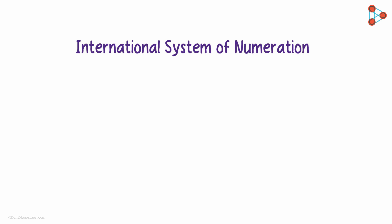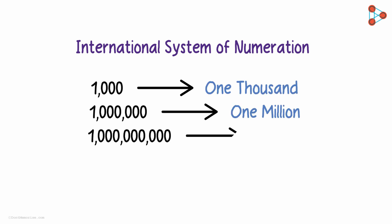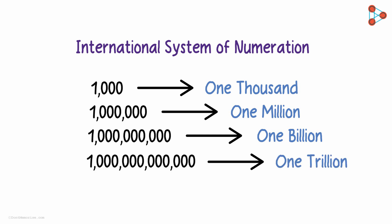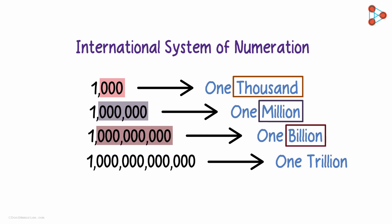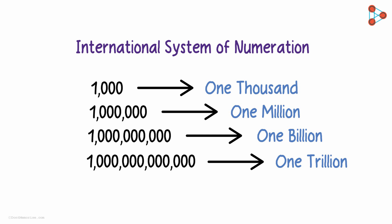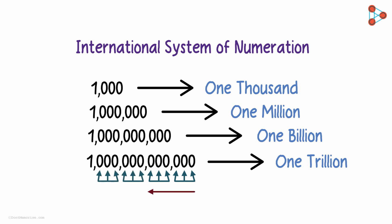They use the international system of numeration. The international system is interesting and quite easy to understand. In the international system: this is 1,000; this is 1 million; this is 1 billion; and this is 1 trillion. 3 zeros is 1,000; 6 zeros is a million; 9 zeros is a billion; and 12 zeros is a trillion. Multiples of 3 is a good way to remember the international system. There is no concept of lakhs and crores. Notice how commas are marked — 3, 3, 3. A comma is marked after every three digits from the right.